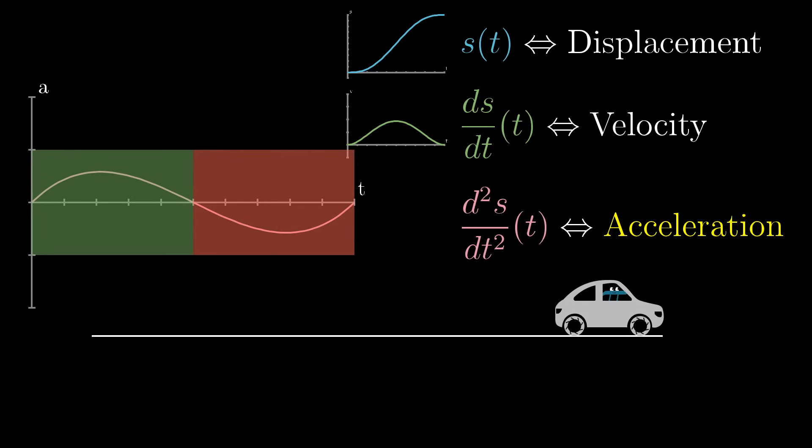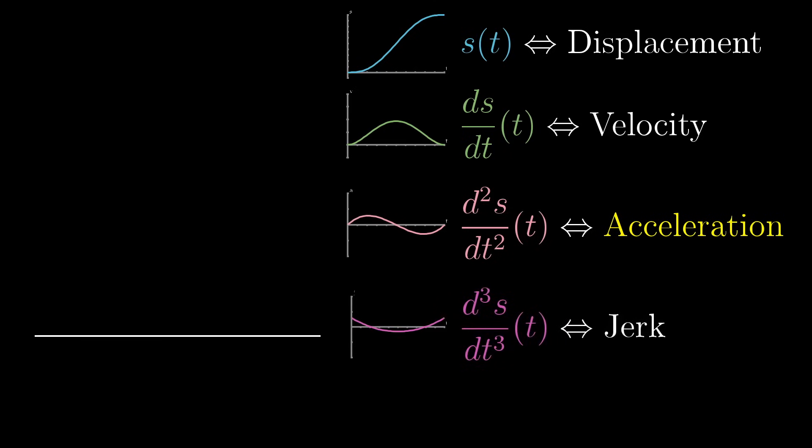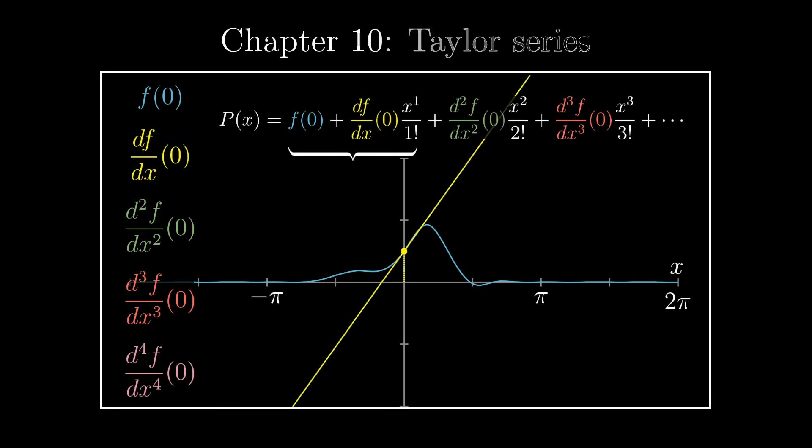The third derivative, and this is not a joke, is called jerk. So if the jerk is not zero, it means that the strength of the acceleration itself is changing. One of the most useful things about higher order derivatives is how they help us in approximating functions, which is exactly the topic of the next chapter on Taylor series. So I'll see you there.